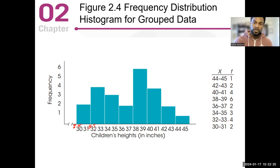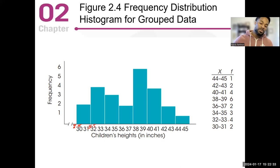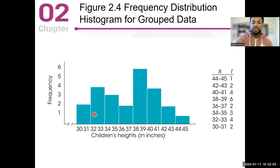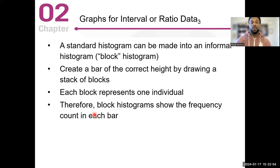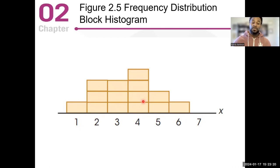This is what we call a standard histogram — smooth bars that all touch. You can also create a more informal histogram where each individual block represents an individual score. In the informal histogram, you have individual blocks where one person scored one, three people scored two and three, four people scored four, two people scored five, one person scored six, and nobody scored a seven.